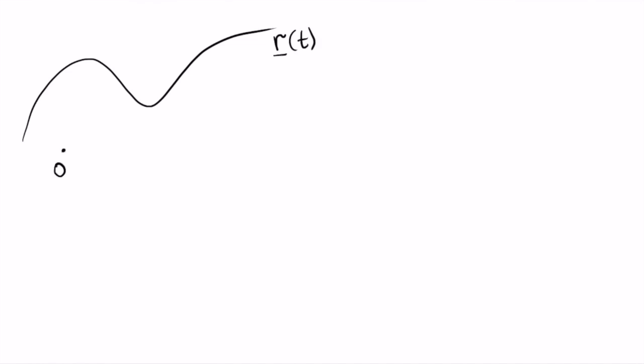Consider a particle traveling in three-dimensional space with origin O. We consider its displacement from time t0 to t0 plus delta t that we denote as dr. Suppose that this particle travels in a force field depicted by these green lines.